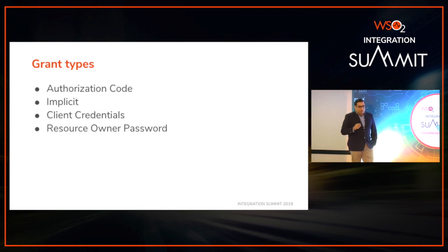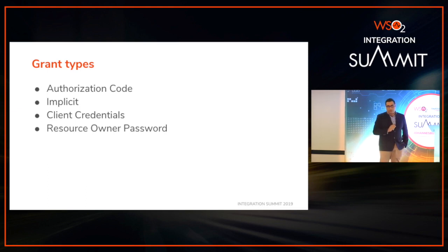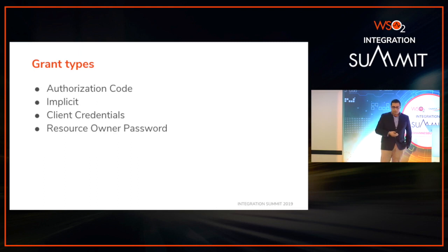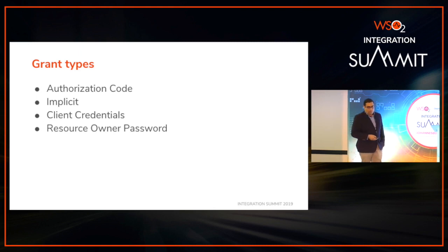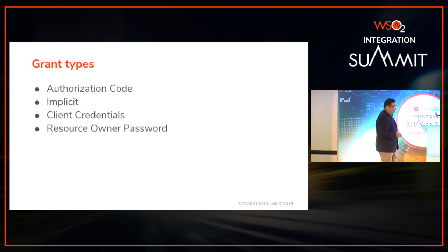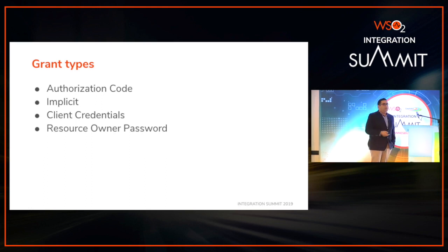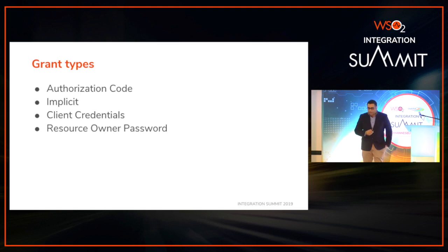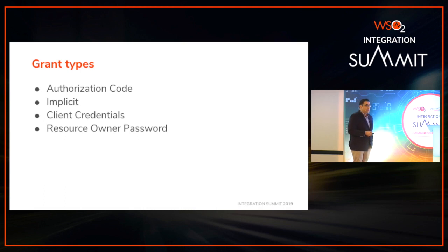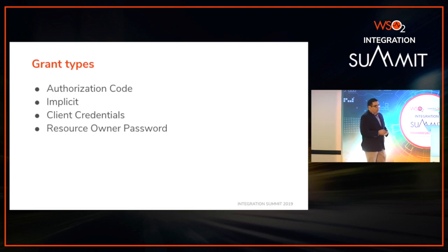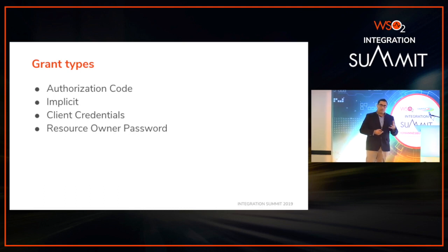What brings authentication into this is OpenID, which sits on top of OAuth2. It's common practice to use OpenID together with OAuth2 so that it handles the authentication part and returns an ID token alongside the access token. There are multiple ways to obtain access tokens, and depending on how you do it, they are referred to as grant types in the OAuth2 spec. Some common grant types are: authorization code, implicit, client credentials, and resource owner password.